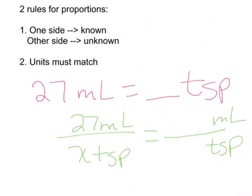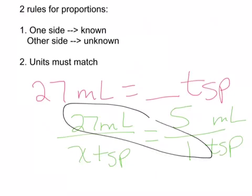As I'm getting used to this chart and getting to know it — because I've done these so many times, I have them memorized now — I know that there are 5 milliliters for every one teaspoon. So my 5 will go on top and my 1 will go on the bottom of the known side. Once again, I've got the two rules followed: first side is my unknown, the other side is my known. Now to solve: I take 27 times 1, which is 27, then divide by 5, which gives me 5.4. So for 27 milliliters, my answer is 5.4 teaspoons.